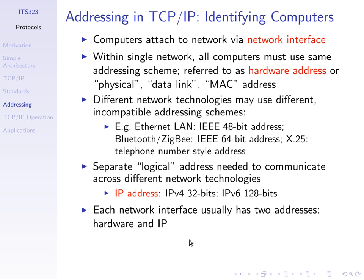Now, imagine our computers in a network. Each computer has a network interface card and attaches to a network using that interface. Each network interface normally has an address on that network — we give it an address so that when we want to communicate with some other device, we can use that address to specify which device we want. The name of the address that the network interface gets is called the hardware address, because it's associated with a piece of hardware, the LAN card. Other names are physical address, data link address, or MAC address.